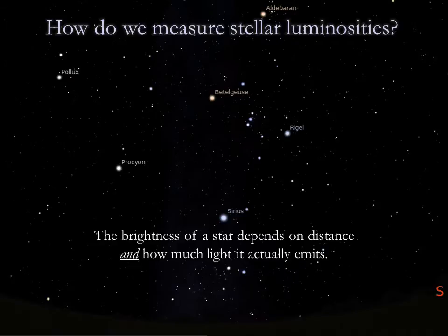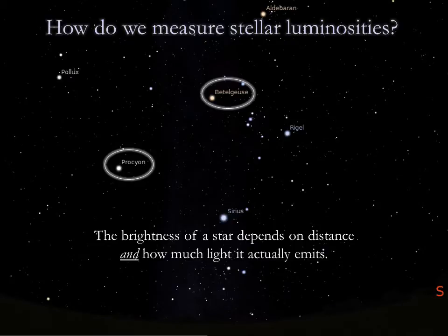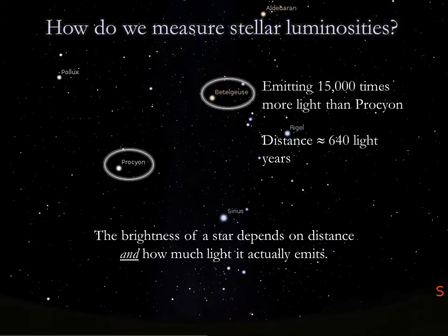The difference in brightness does not by itself tell us anything about how much light these stars are generating, because the brightness of a star depends on its distance as well as on how much light it actually emits. For example, the stars Procyon and Betelgeuse appear about equally bright in our sky, but Betelgeuse emits about 15,000 times as much light as Procyon. Procyon appears as bright because it's over 50 times closer.